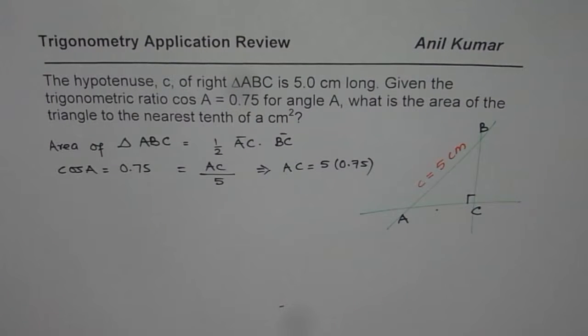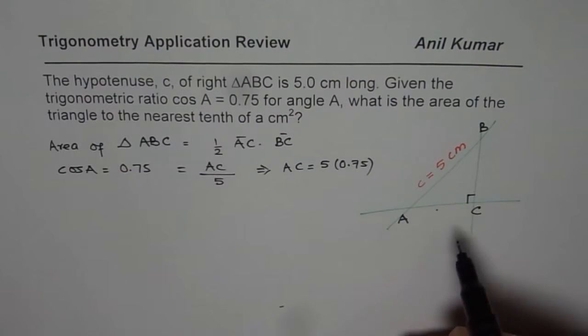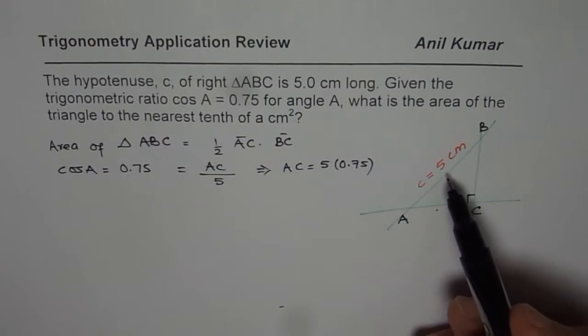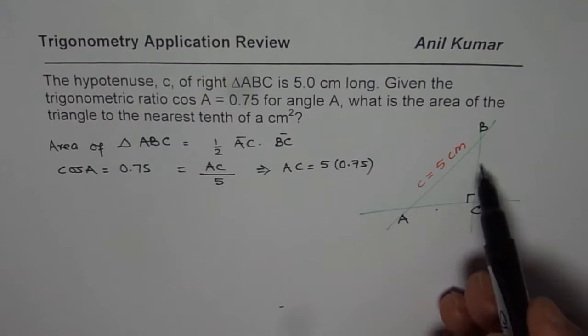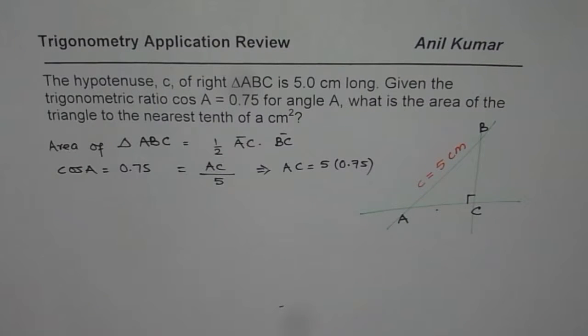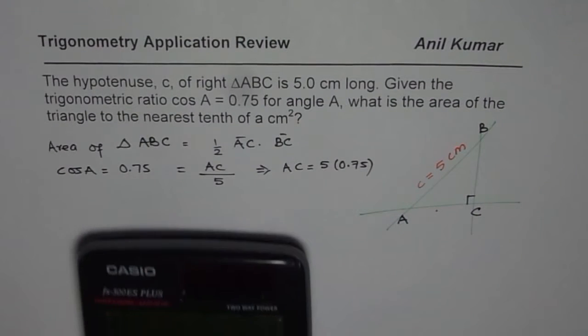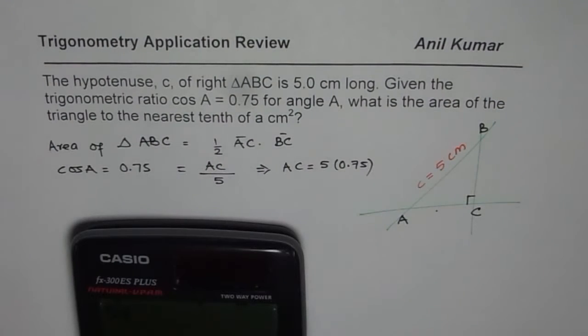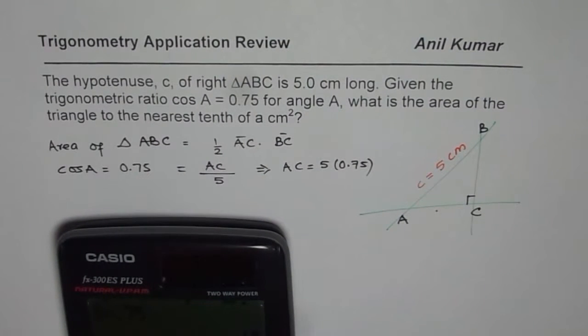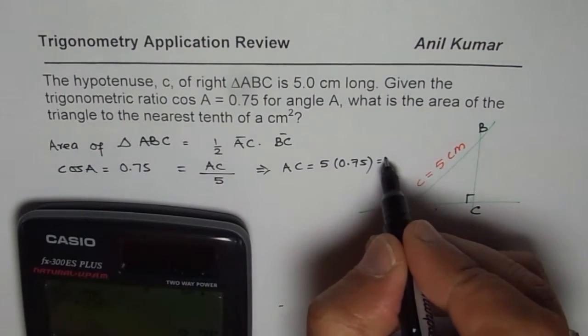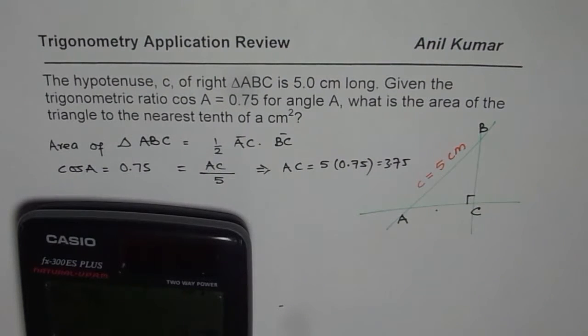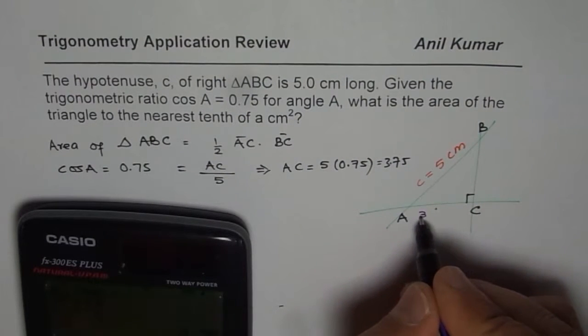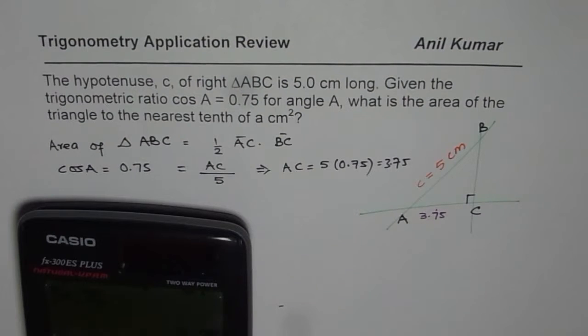Now we can actually also find BC. You could use Pythagorean theorem. You can say 5 square minus this square, square root is BC. So let's do 5 times 0.75 equals in decimals 3.75. So let us write this side as 3.75. And now let's find BC.